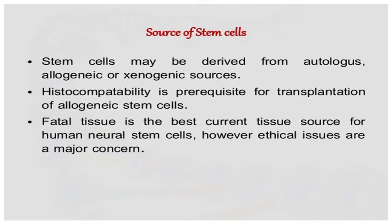The sources of stem cells include autologous, allogeneic, and xenogeneic sources. Autologous means self, allogeneic means from another individual of the same species, and xenogeneic sources are distantly related, such as from animals. Histocompatibility is a prerequisite for the transplantation of allogeneic stem cells, and MHC restrictions are major factors so that transplantation is not rejected.